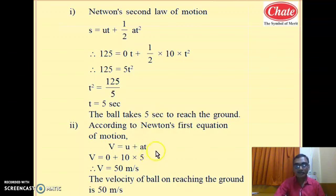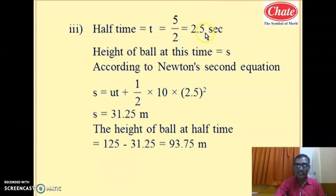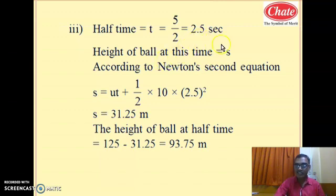We have calculated two parameters. Now let us find the third — the height of the ball at half the time. Half time means total time 5 divided by 2, which is 2.5 seconds. In this 2.5 seconds, how much distance does the ball travel? Since the motion begins from the highest point in free fall toward the ground, we again use the distance-time relation — Newton's second equation of motion, s = ut + ½at².